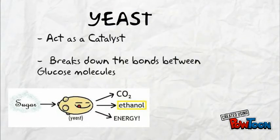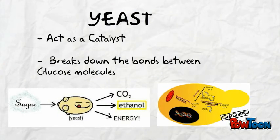There is also yeast, which produces enzymes — specifically zymase — that act as a catalyst. The enzyme breaks down the bonds between glucose molecules and starch.